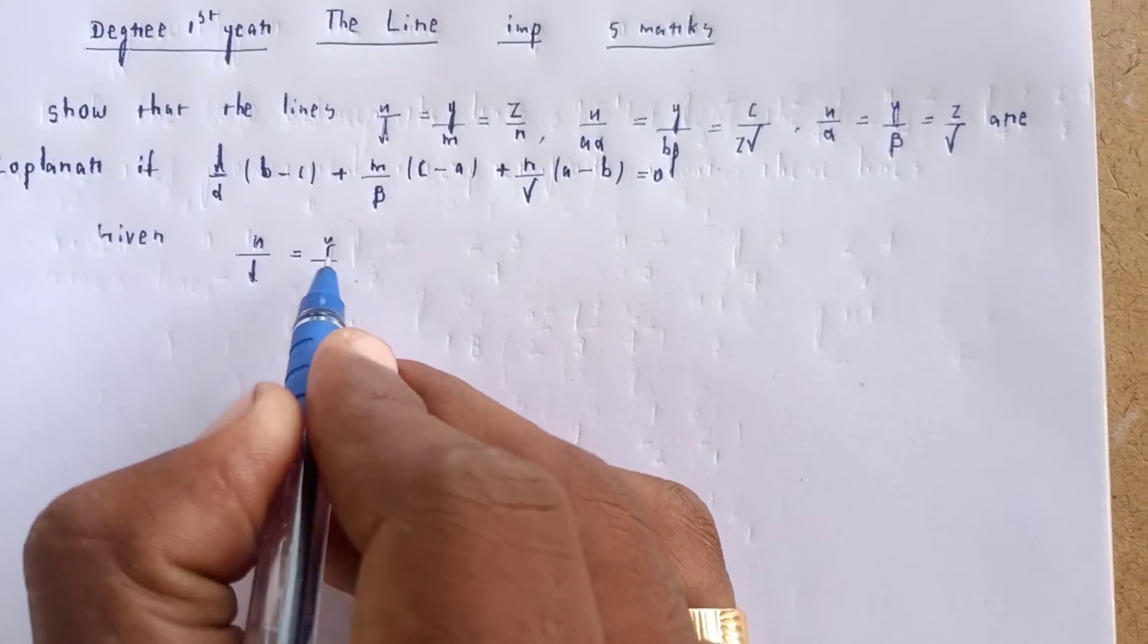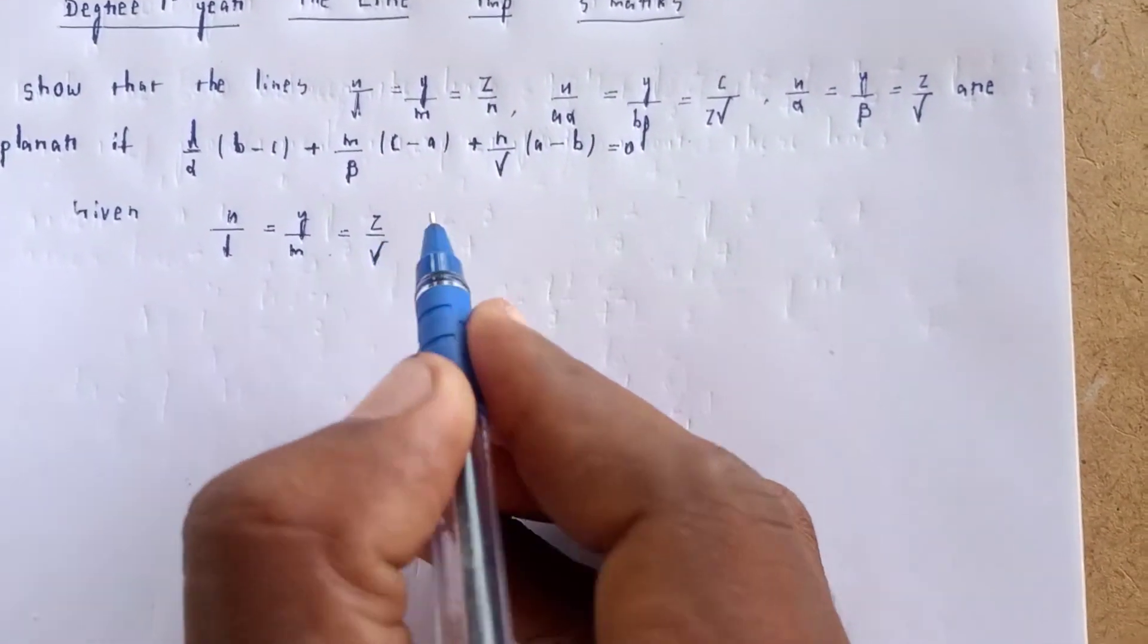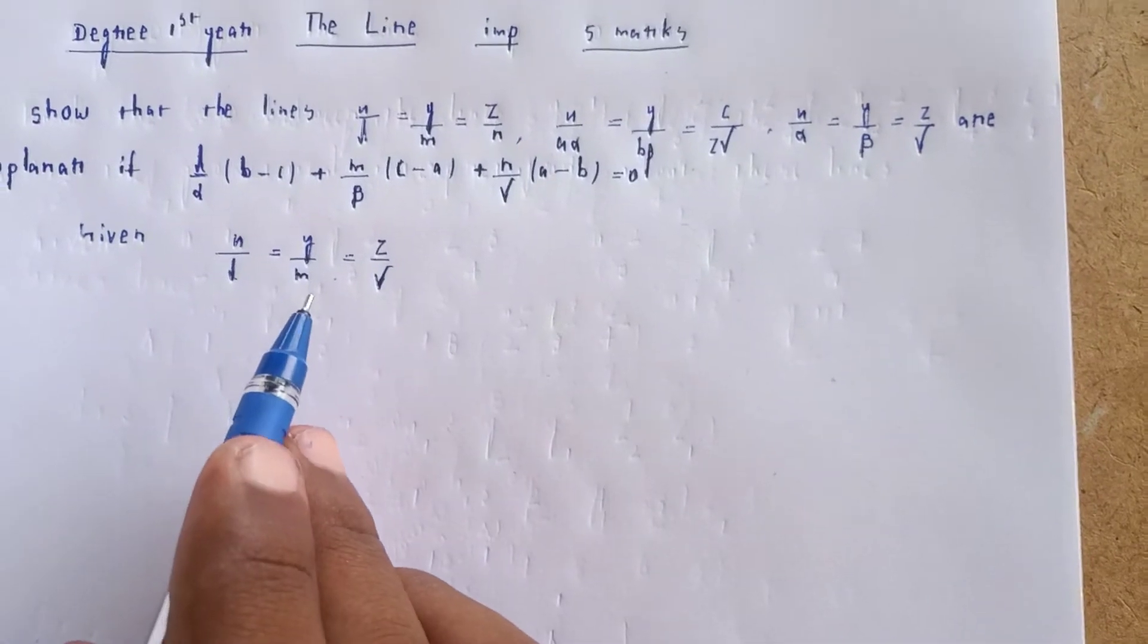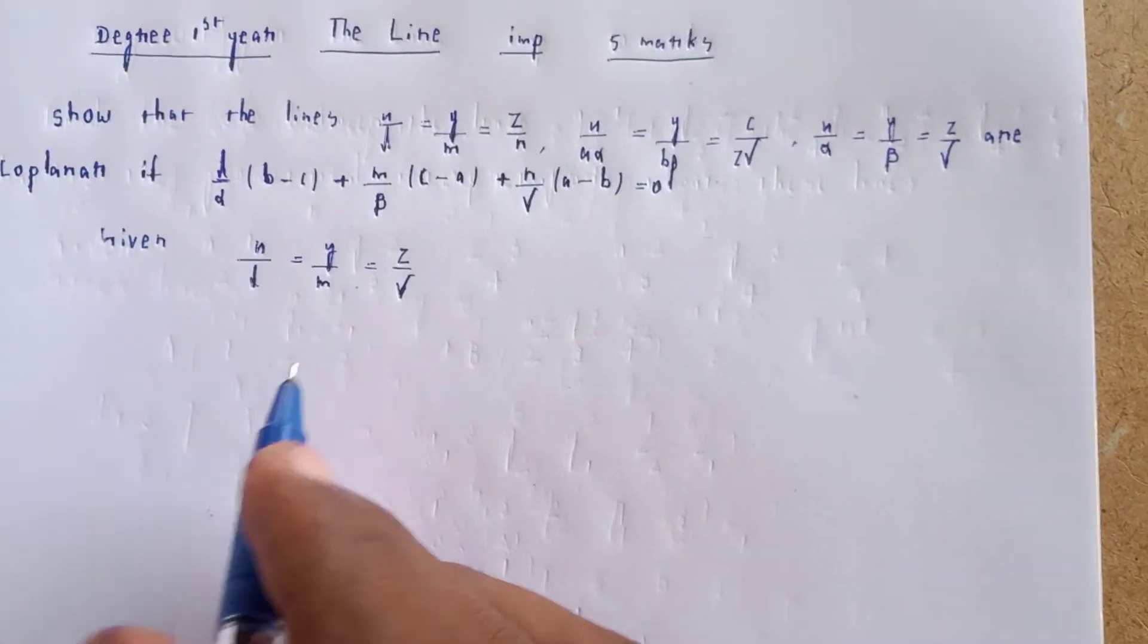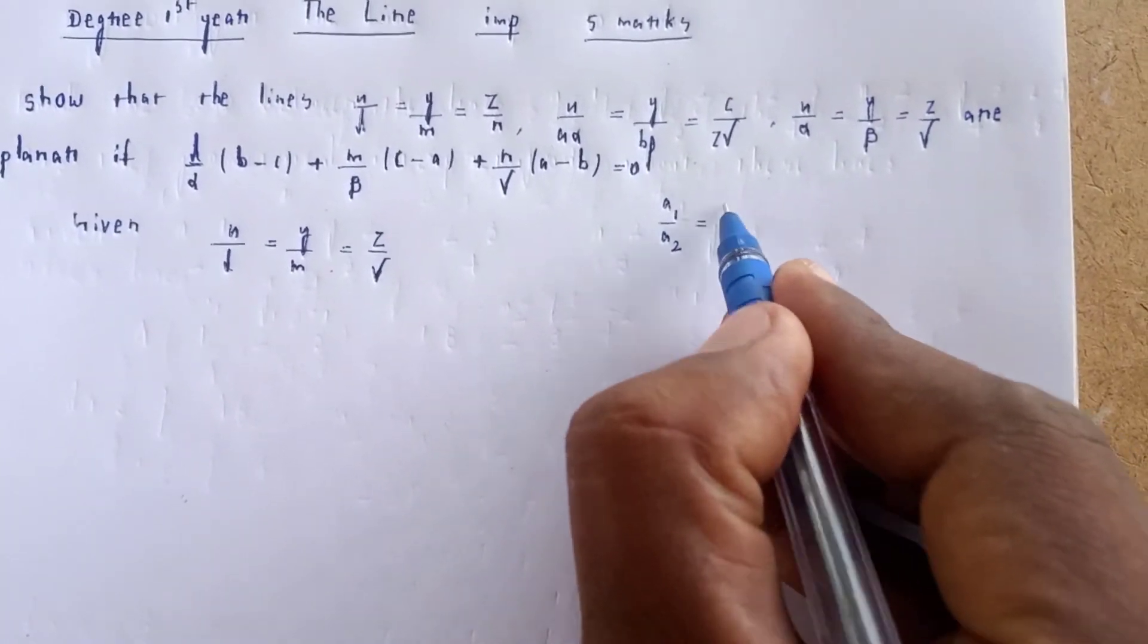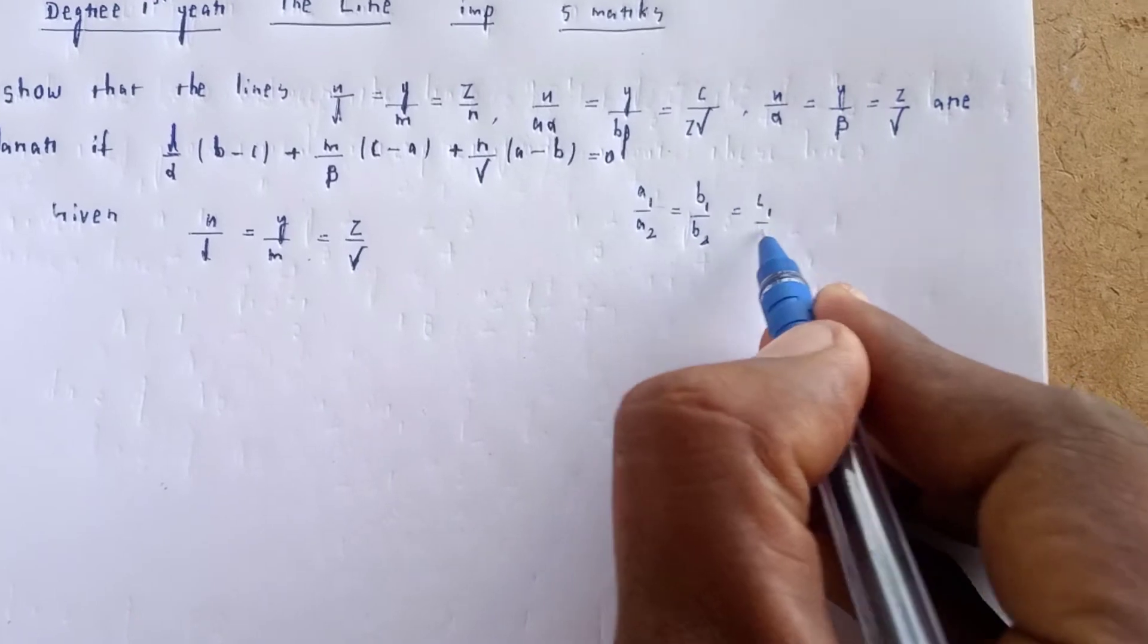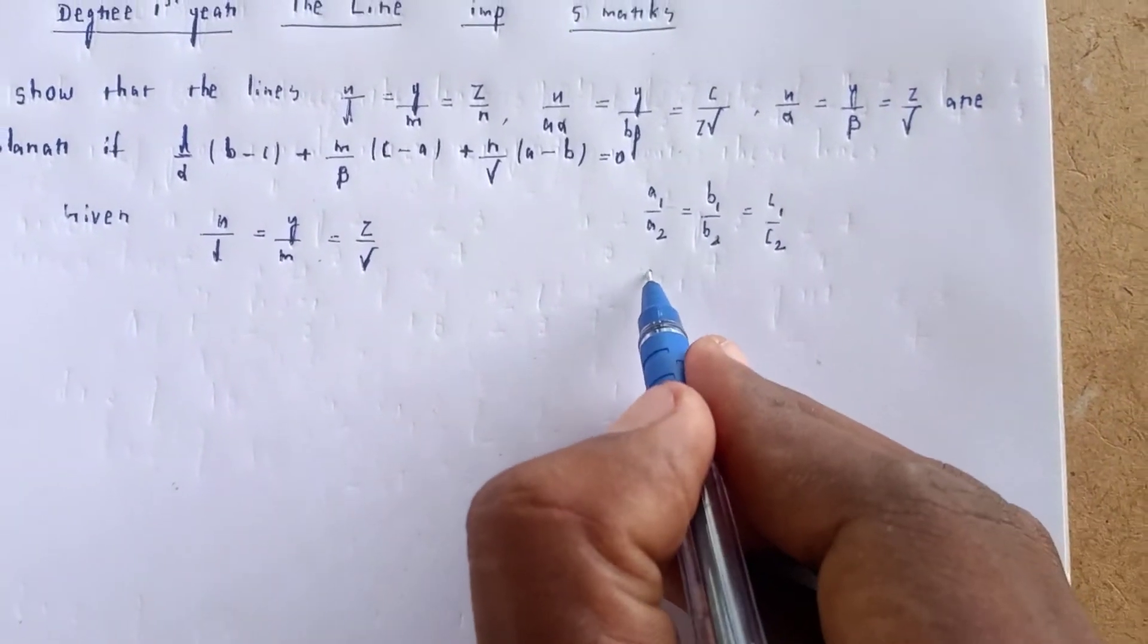For perpendicular lines, we have the condition that b1/b2 = c1/c2 and b1/β equals the perpendicular relationship.